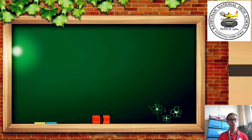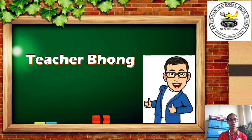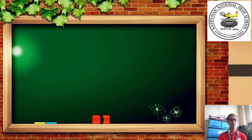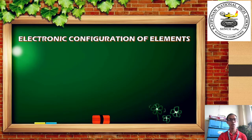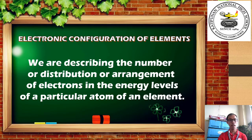Hello everyone, this is teacher Bon, your grade 9 science teacher. Today we will talk about electronic configuration of elements. When we say electronic configuration of elements, we are describing the number, distribution, or arrangement of electrons in the energy level of a particular atom of an element.